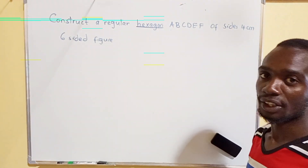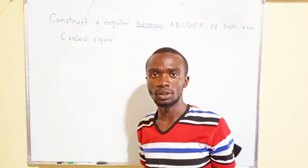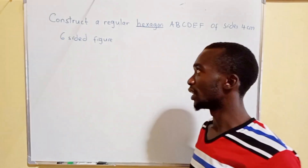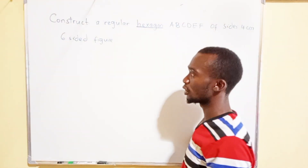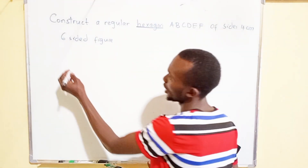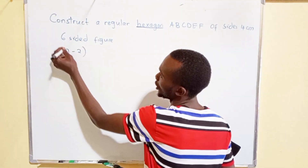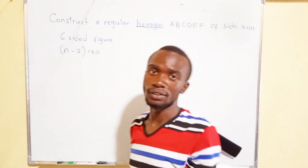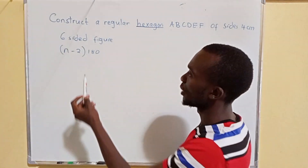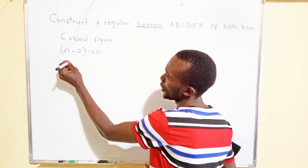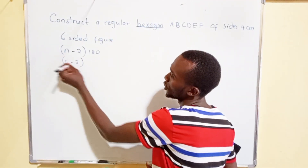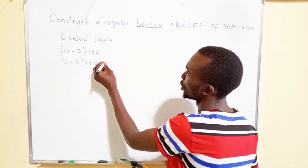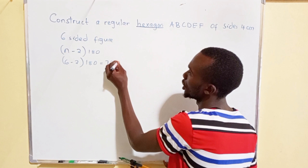For us to construct a regular hexagon, we need to know the sum of the interior angles. To get the sum of the interior angles of a regular hexagon, it is obtained by the formula (N − 2) × 180, where N represents the number of sides. In this case, N is 6, so it's (6 − 2) × 180, which gives you 720 degrees.